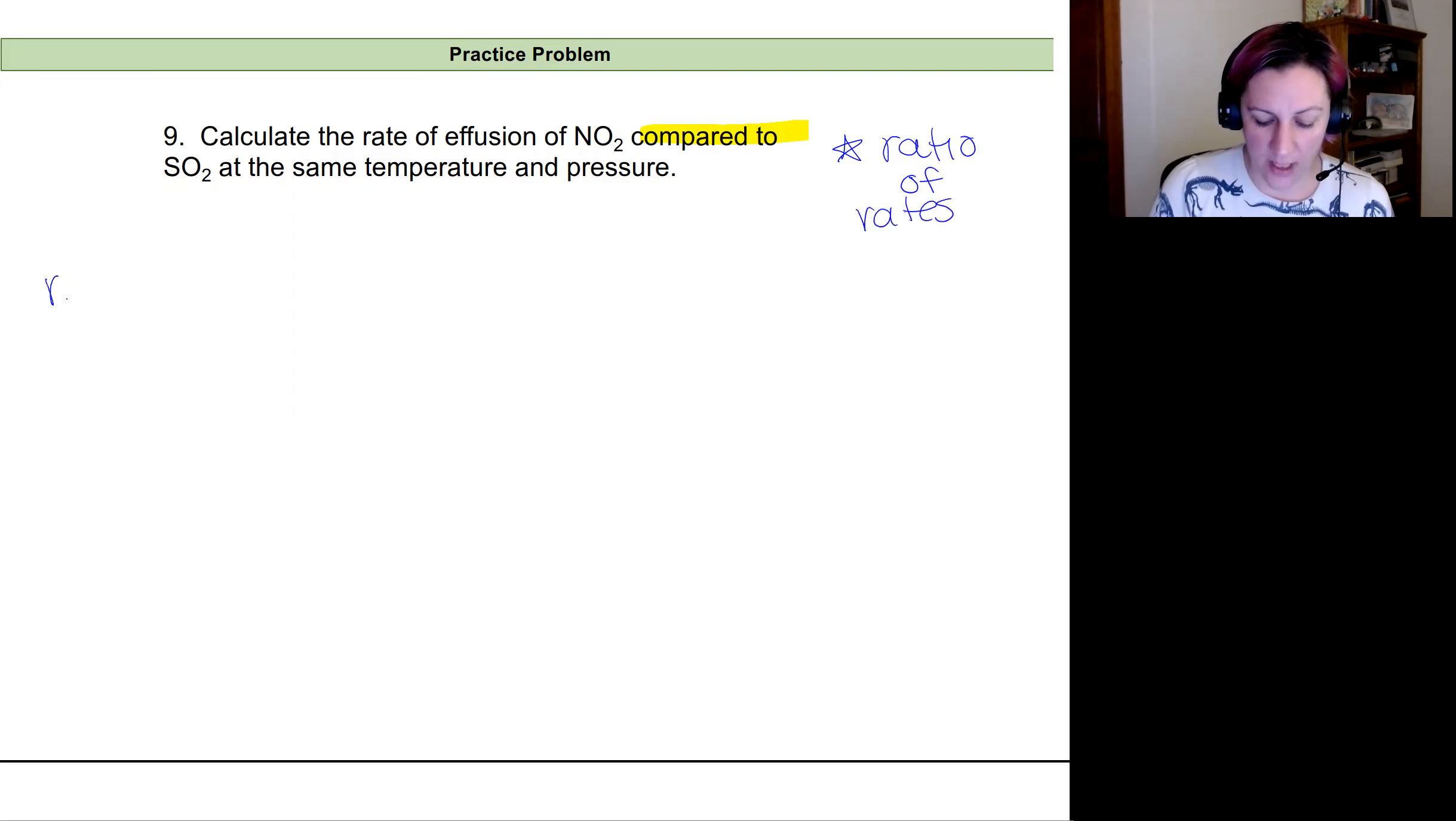So let's look at the rate of NO2 over the rate of SO2. To calculate this, I either need to know the densities or I need to know the molar masses. The molar masses are easy because they're right there on the periodic table.